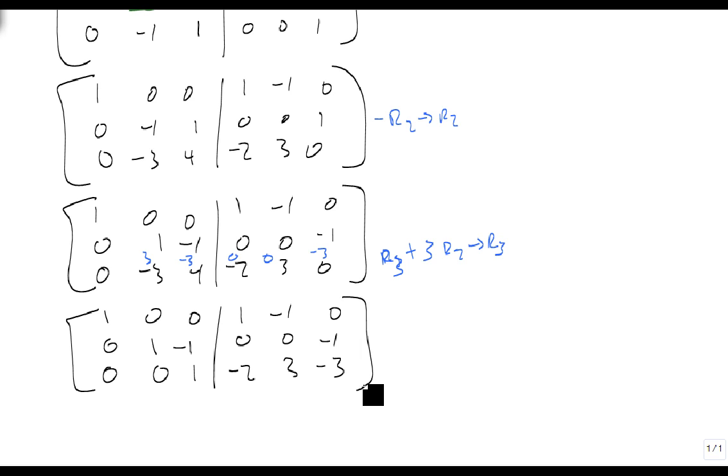And notice we already got it. We already have our third row correct, so we don't need to do any divisions, which is nice. That means there's not going to be any fractions. And then we just need to work it back up, so that's the last spot I have to deal with.